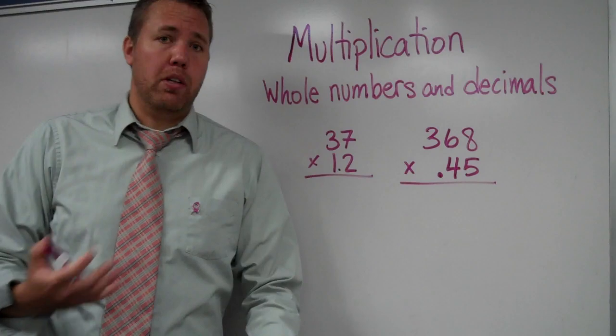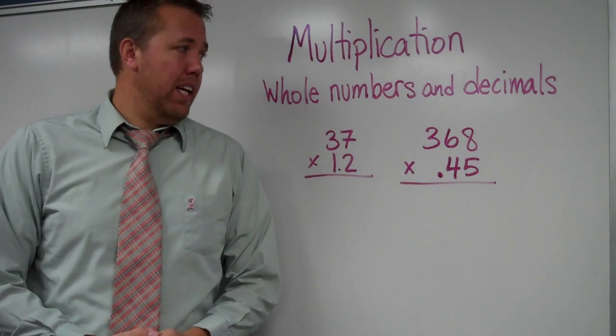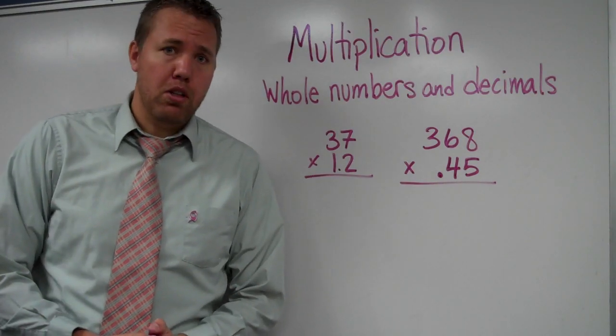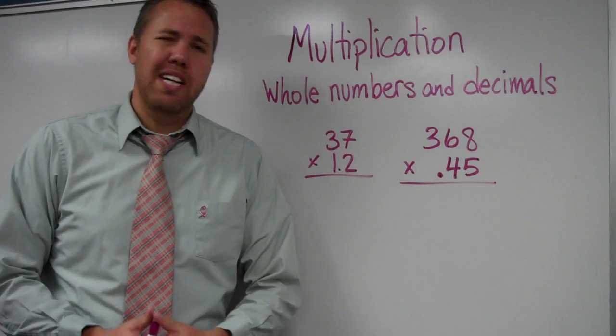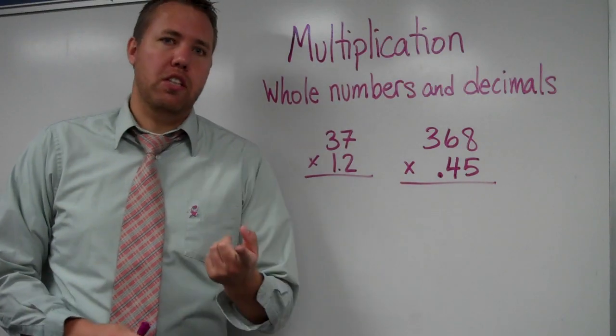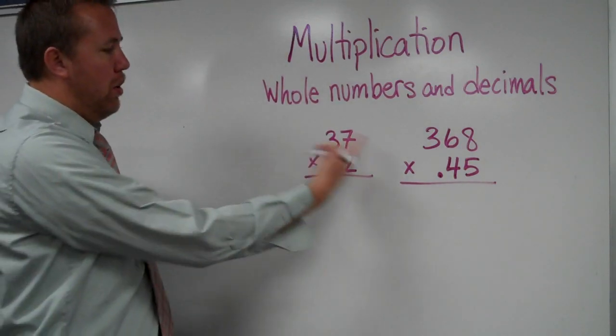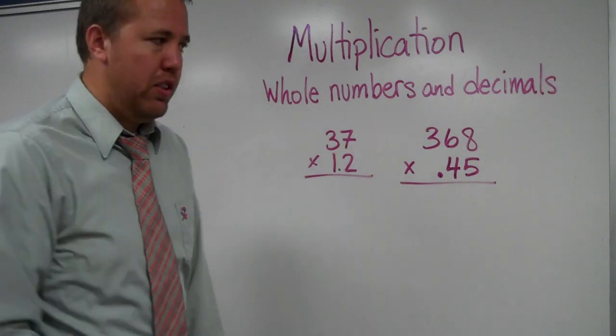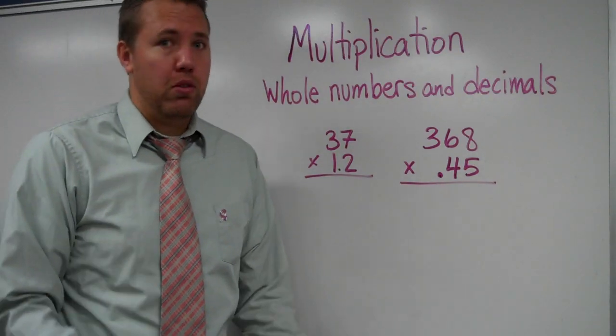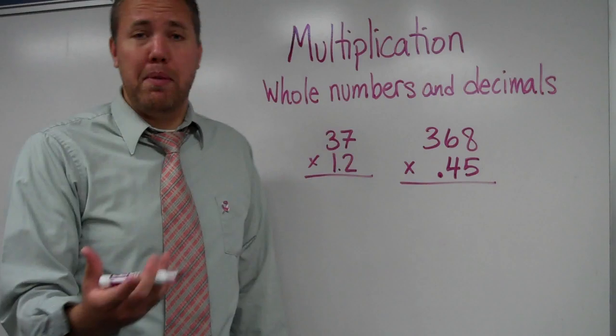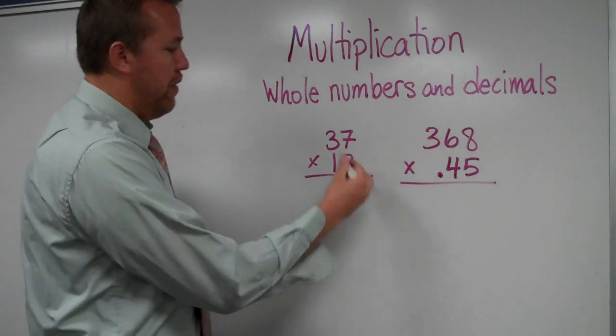As you can see, I've set it up according to the algorithm. Really, there's no difference when you're doing the multiplication part. It's just with the decimal, and I'll teach you that in just a moment. So we have 37 times 1.2. The first thing is to ignore the decimals. You have to remember them later, but you can ignore them for now.